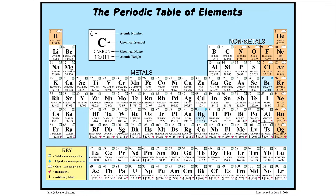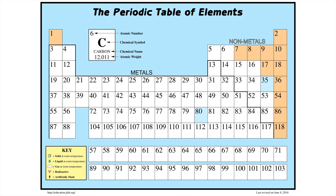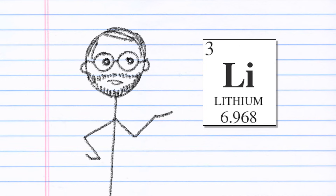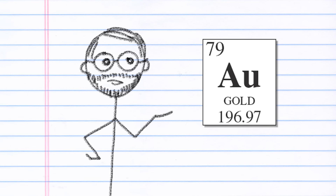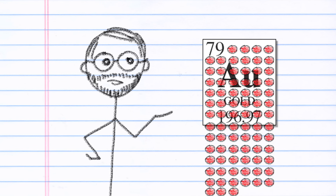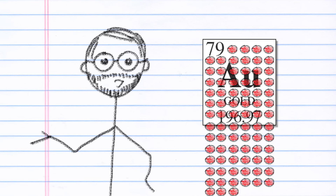You might notice that the atomic number is different for every element. Every element contains a unique number of protons. If an atom contains exactly 3 protons, then it's an atom of lithium. If an atom contains exactly 79 protons, then it's an atom of gold.